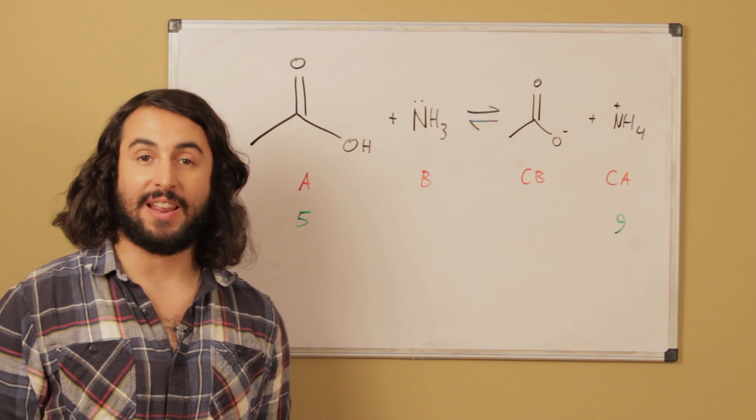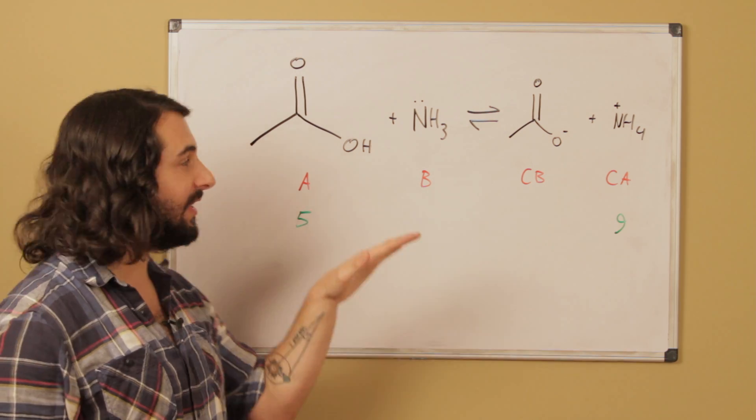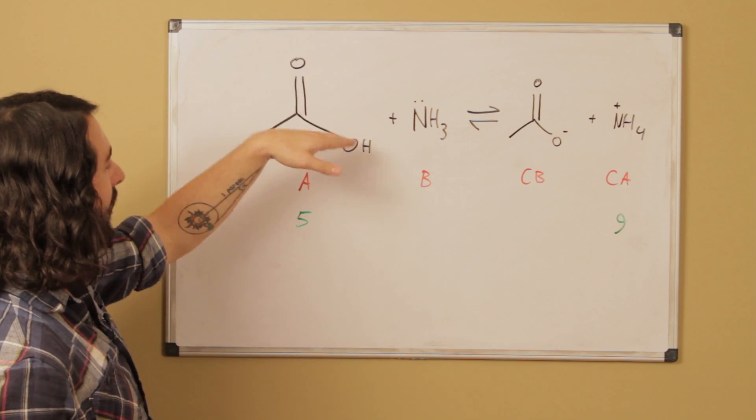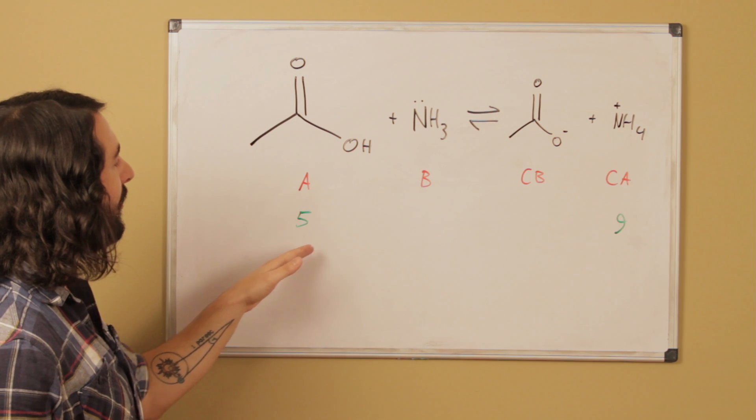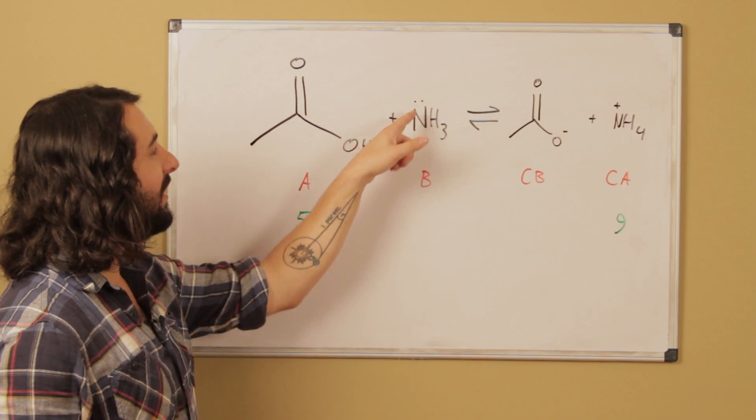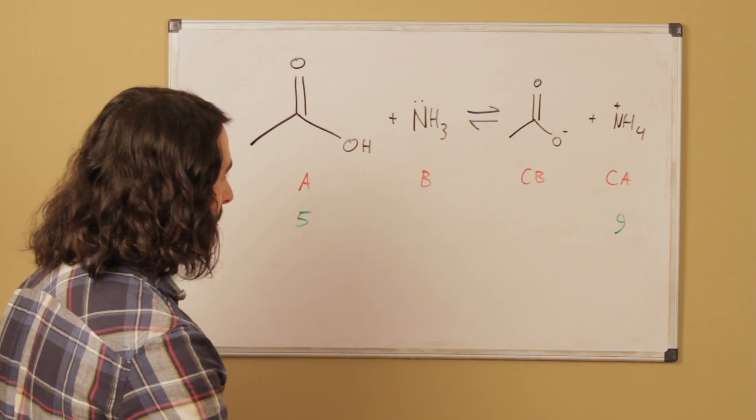This carboxyl proton is pretty acidic with a pKa around 5. That is because the conjugate base is the carboxyl anion that is resonance stabilized. That anion can move throughout this portion of the molecule. Ammonia is going to be the base. This lone pair on the nitrogen can accommodate that proton.